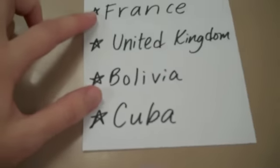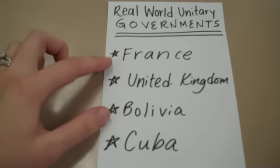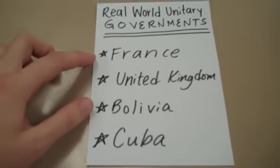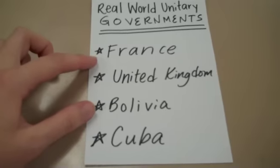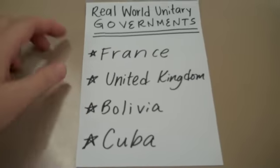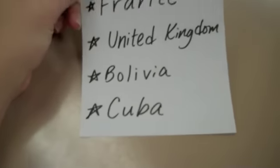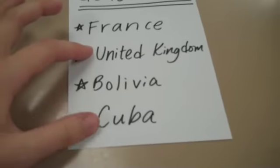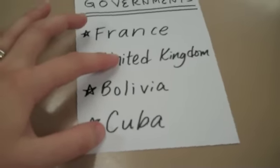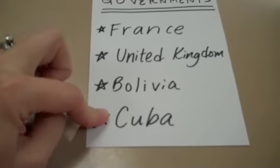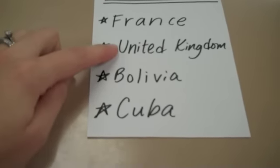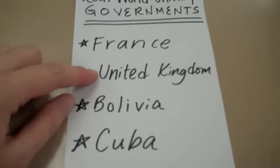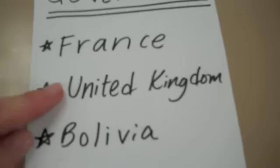You might be confused because Cuba has a dictator — currently Raul Castro, who was given power from his brother Fidel Castro. United Kingdom and Cuba are both unitary. However, Cuba is a dictatorship or an autocracy, whereas the United Kingdom is not — they are a democracy where citizens can vote. So to help us with this, I made this handy dandy chart. Unitary governments again have one central authority.